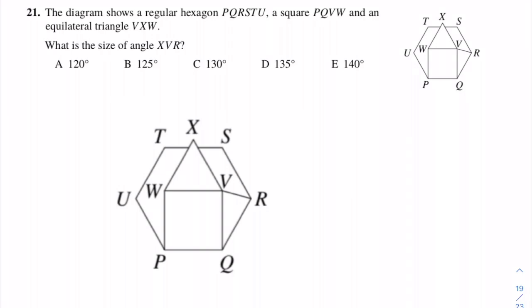Welcome to this Easy Maths video. Today we are looking at questions 21 to 25 from the 2019 Junior Maths Challenge. Question 21: the diagram shows a regular hexagon PQRSTU, a square PQVW, and an equilateral triangle VXW. What is the size of angle XVR? So XVR is this angle here. Let's label angles: VXW is an equilateral triangle, so each of these angles is 60 degrees.